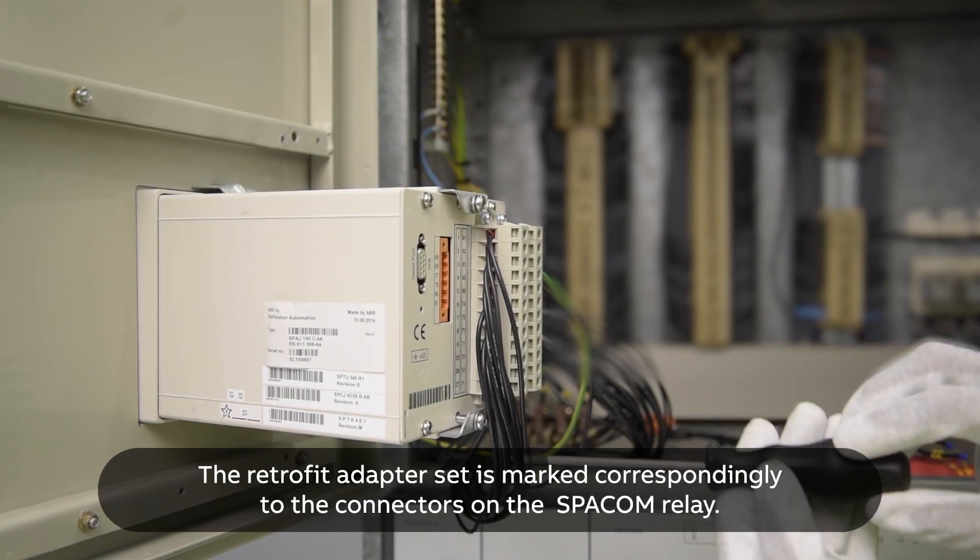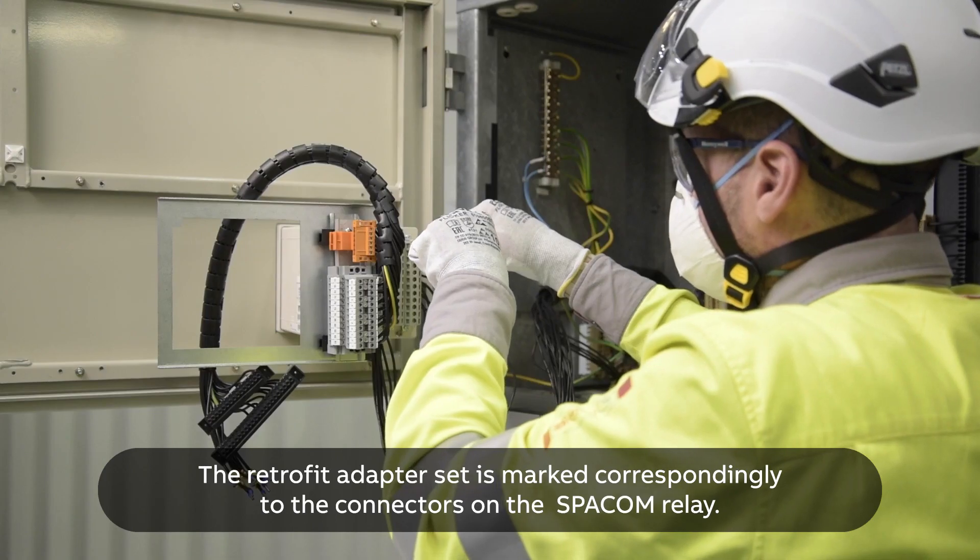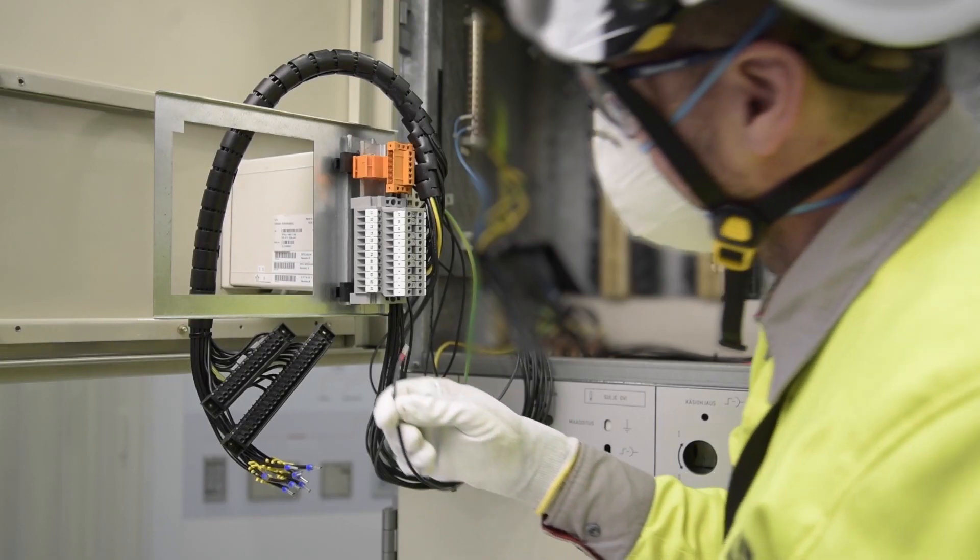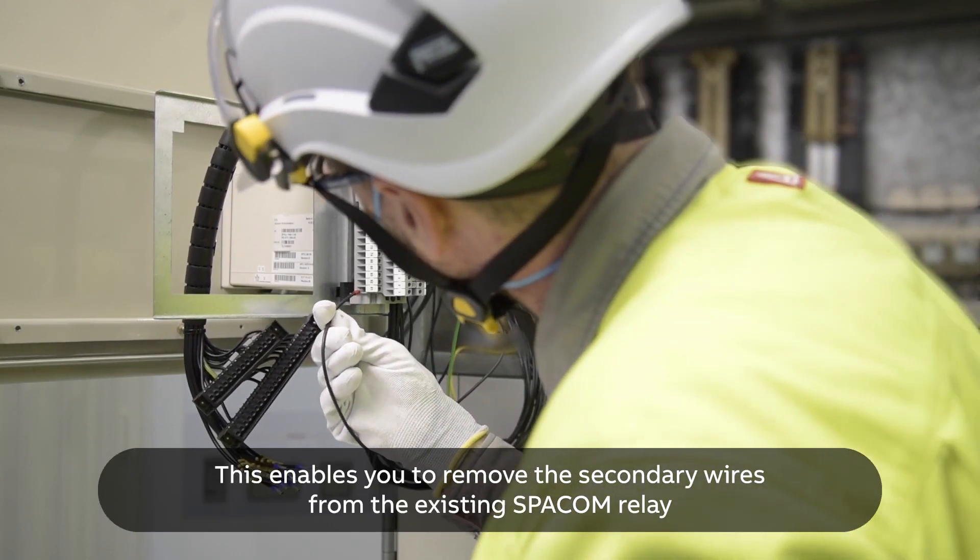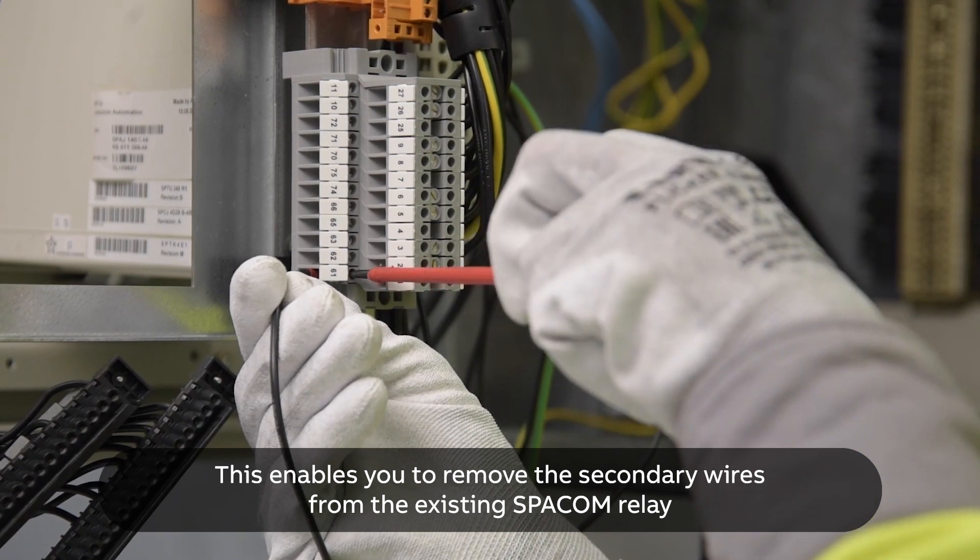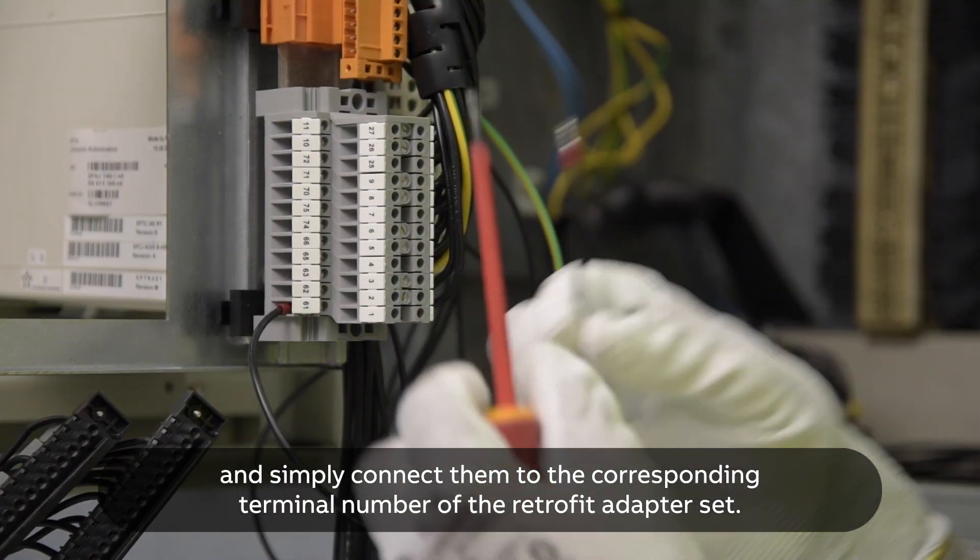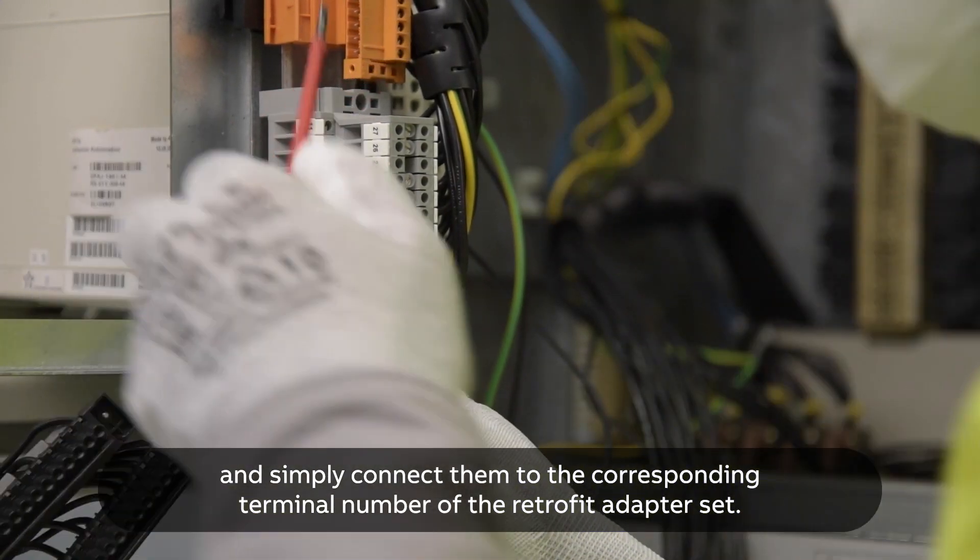The retrofit adapter set is marked correspondingly to the connectors on the SPA-COM relay. This enables you to remove the secondary wires from the existing SPA-COM relay and simply connect them to the corresponding terminal number of the retrofit adapter set.